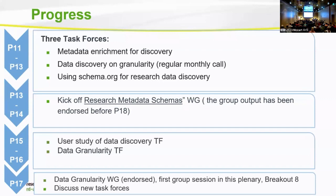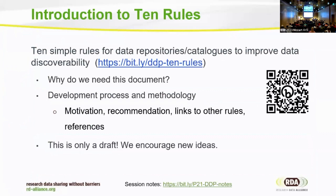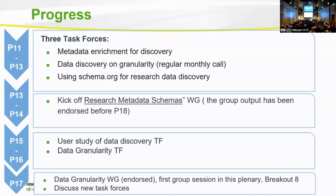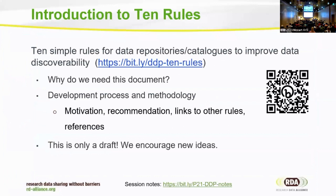After those three task forces finished, we also spun off two working groups: the Research Metadata Schemas working group and the Data Granularity Working Group. The Research Metadata Schemas group is about how to mark up your metadata in schema.org and portals with structured metadata on the landing page, so that data can be more discoverable by web search engines and more interoperable with other data repositories. Both working groups have produced their outputs — please check the webpage to see the recommendations.